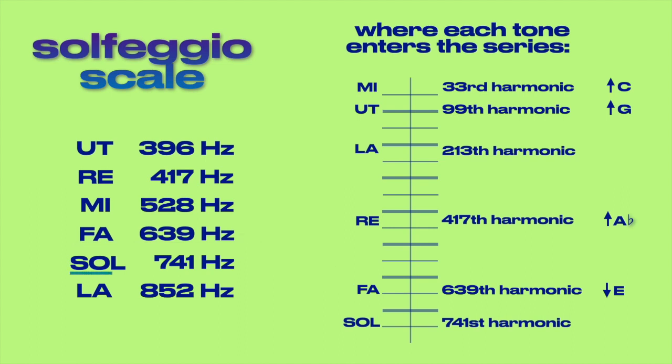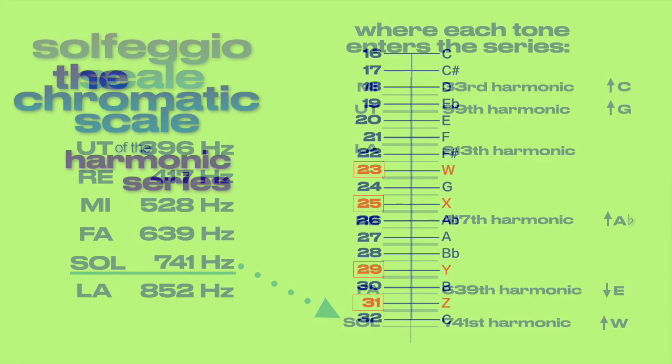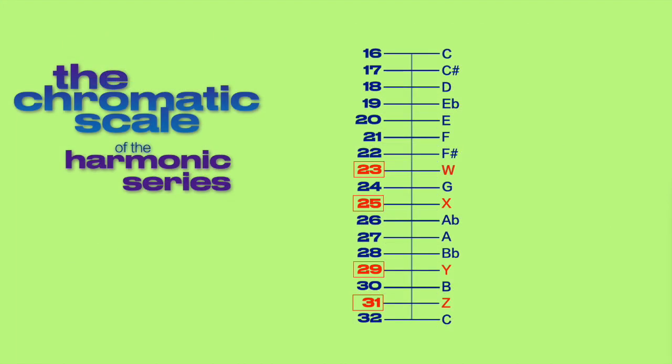Sol at 741 Hz enters the series in the 741st harmonic as a sharp W note, one of the phantom notes created in the harmonic chromatic scale that's unacknowledged by mainstream music.